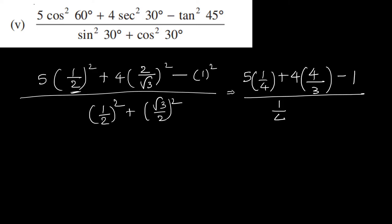By 1 by 2 whole square is 1 by 4. Root 3 by 2 whole square is 3 by 4. So 1 by 4 plus 3 by 4 is 1.